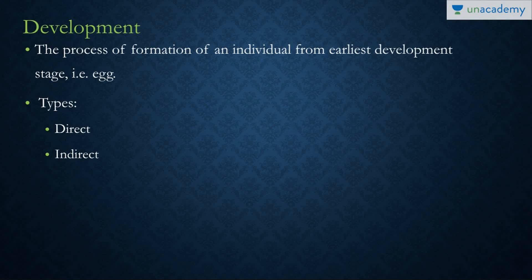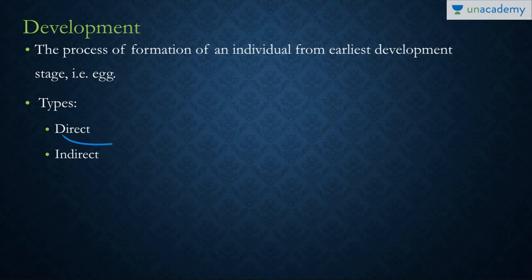Next we come to development. Development is basically how an adult organism is formed from the earliest developmental stage, which is the egg. It can be of two types: direct or indirect.